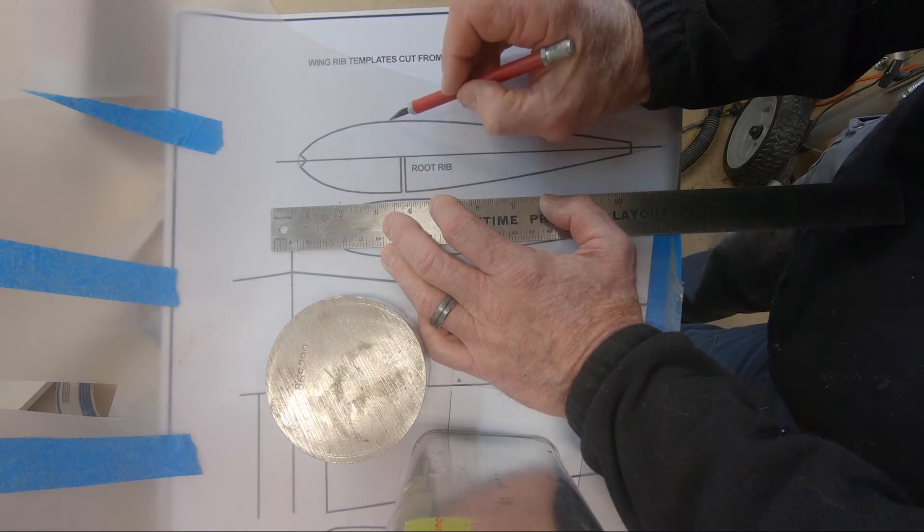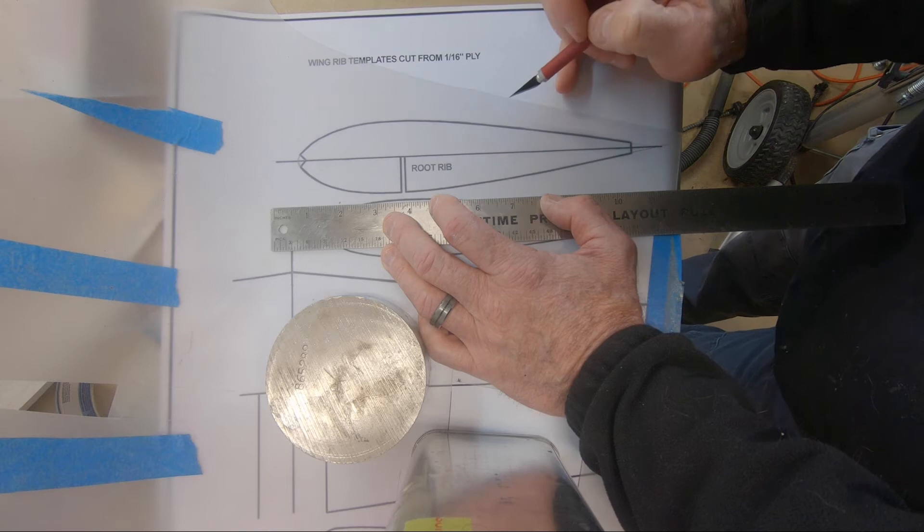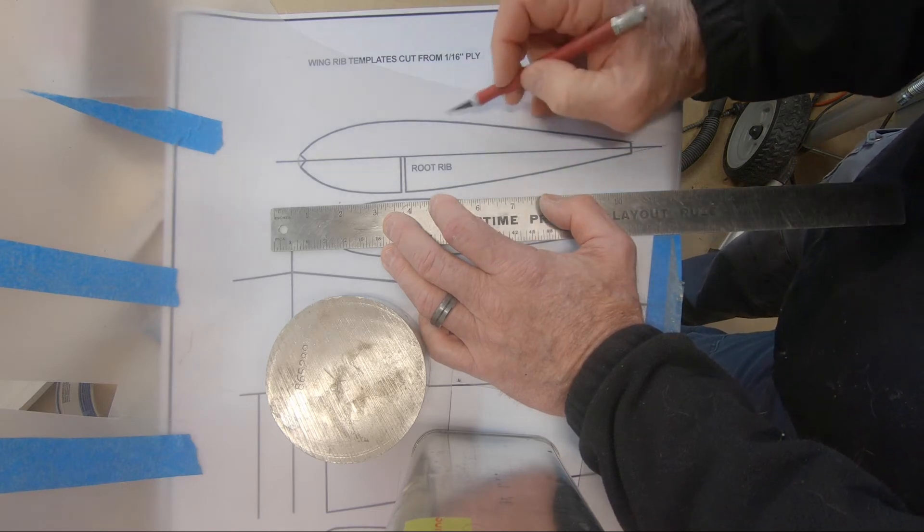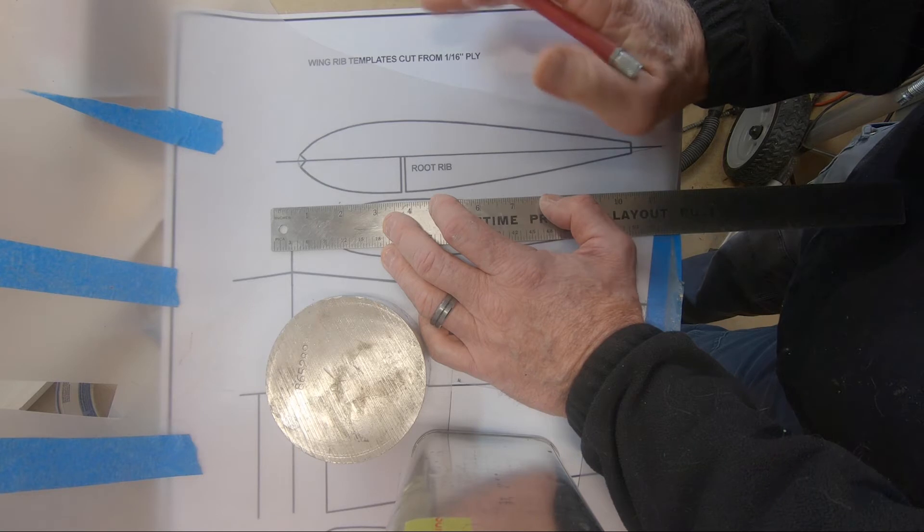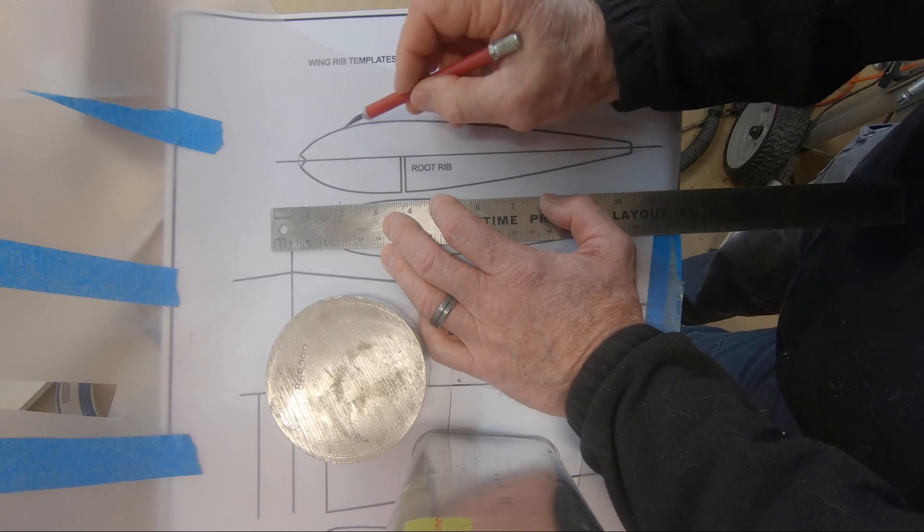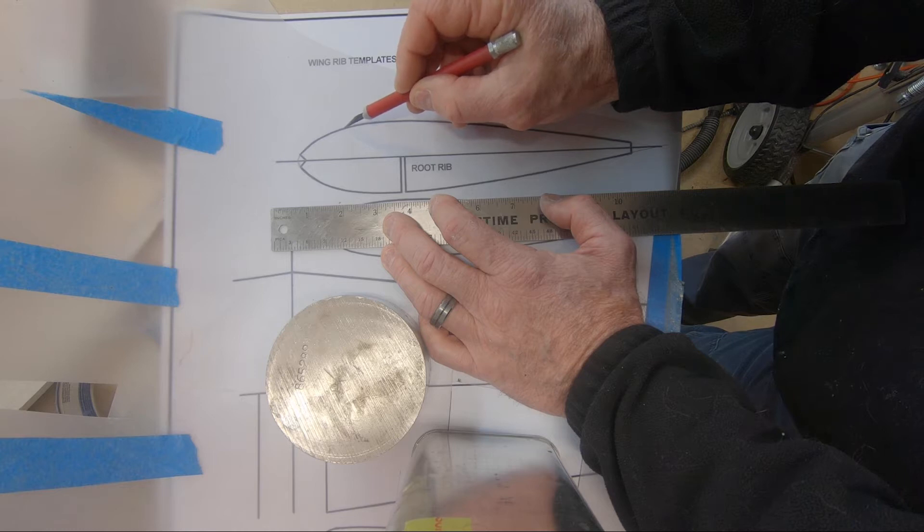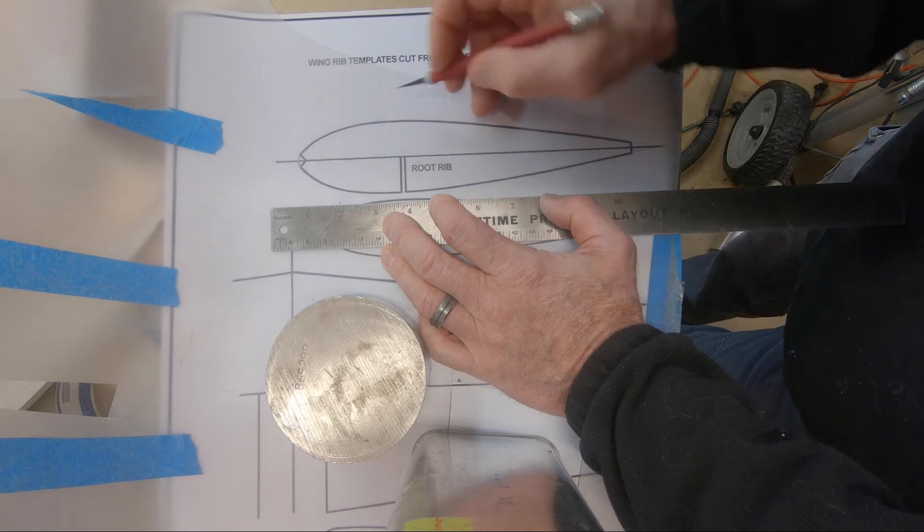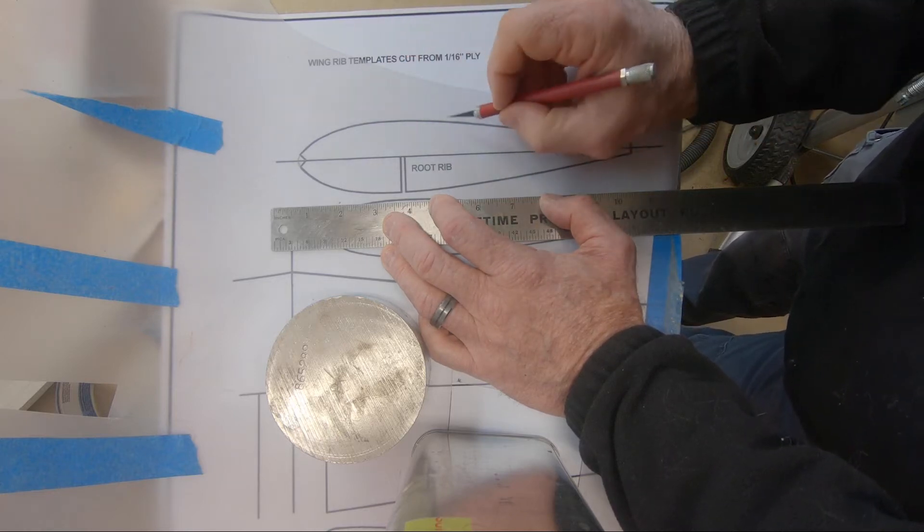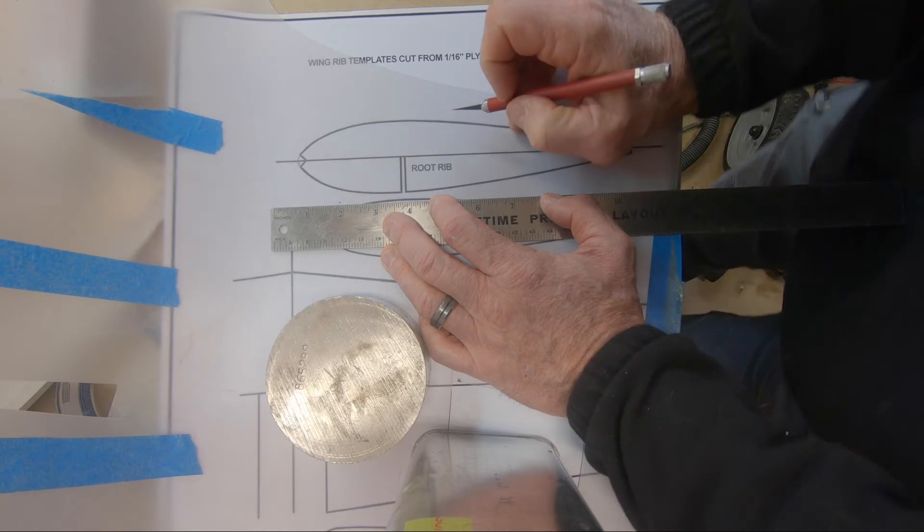So, you've got to decide what side of the line you're going on here. In this case, since it's going to be sheeted with sixteenths or cap strips, the sixteenth will go over the top of the foam, which will bring it back up to this dimension here. So, I'm going to cut it on the inside of the line to compensate for the sheeting.